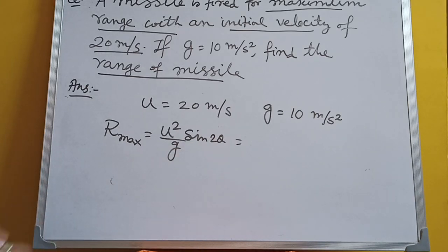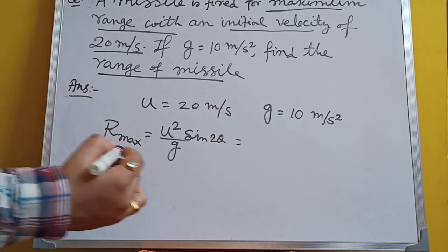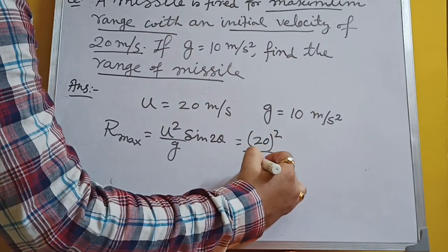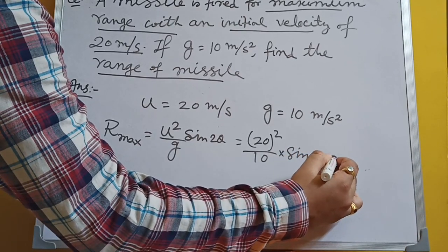If we want to get the maximum range, we have to take the value of theta equal to 45 degrees. That is 20 squared by 10 into sin 2 into 45 degrees.